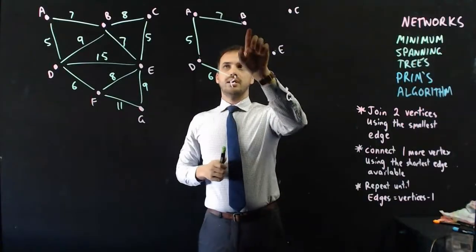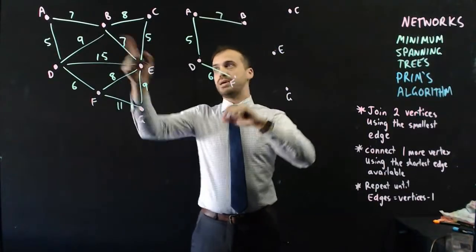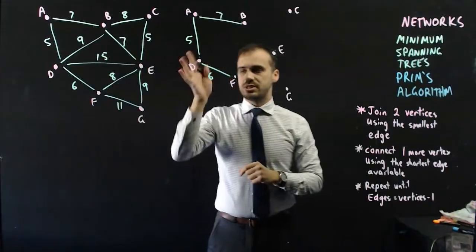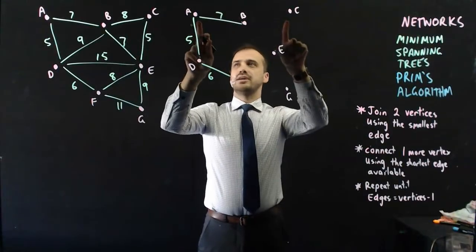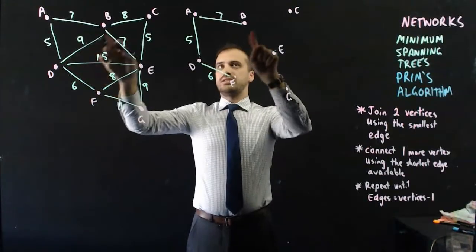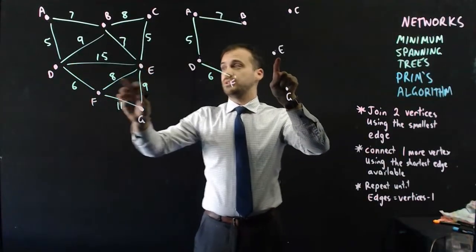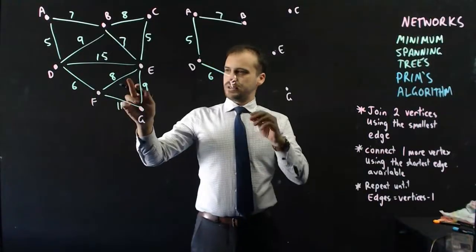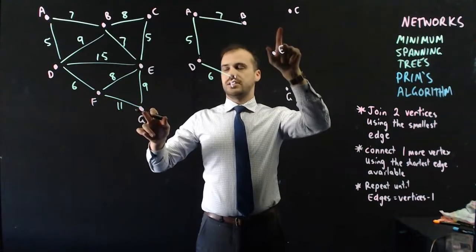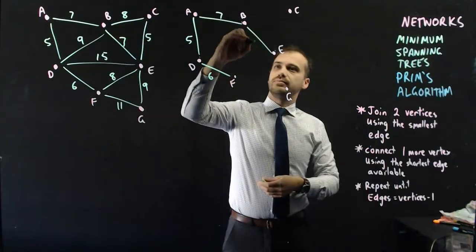Next up, we need to join A, B, D, and F to one of these vertices. B can connect to C or E with an 8 or a 7. 7's pretty good. A can't connect directly to C, E, or G, so don't consider A. D, we don't need to connect to B because we've already connected to B. D can't connect to C. D can connect to E with a 15. That's terrible. And D can't connect directly to G. F can connect to E with an 8, which is pretty good, or G with an 11, but it can't connect to C. The best number we've seen so far is B connecting to E, which is a 7.